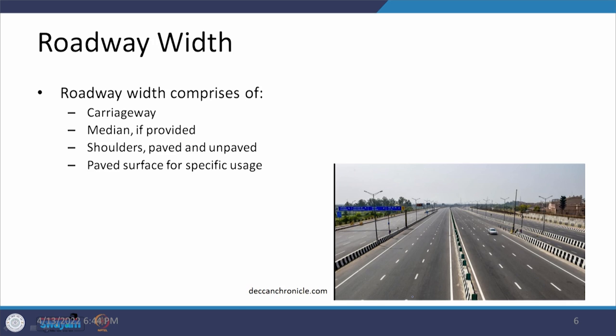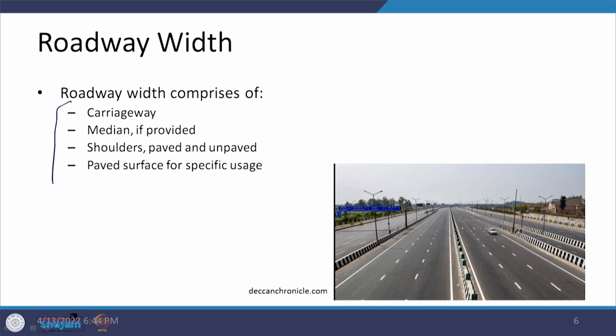When we have the carriageway, then the shoulders, and then the medians, all of these together constitute the roadway width. The roadway width is a combination of the carriageway, median, shoulders, or any paved surface utilized for a specific usage. As shown in the photograph, there is a wide space that is part of the roadway width because it is utilized for different movements.